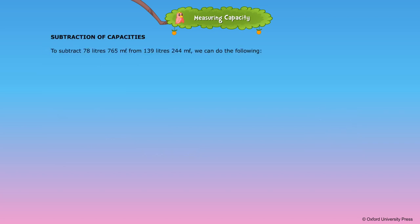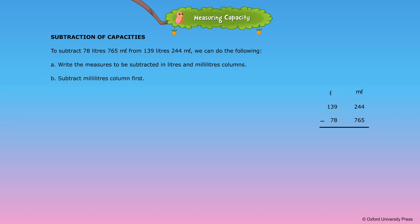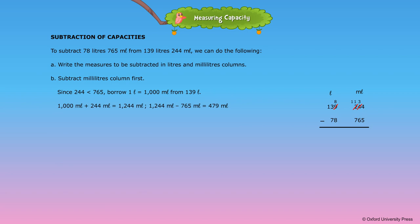Subtraction of capacities. To subtract 78 liters 765 milliliters from 139 liters 244 milliliters, we can do the following. A. Write the measures to be subtracted in the liters and milliliters columns. B. Subtract the milliliters column first. Since 244 is less than 765, borrow 1 liter, which equals 1000 milliliters, from 139 liters. 1000 milliliters plus 244 milliliters is equal to 1244 milliliters.